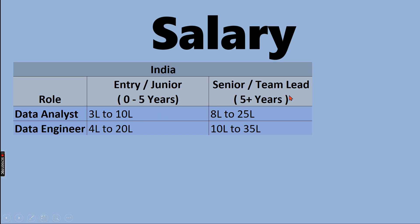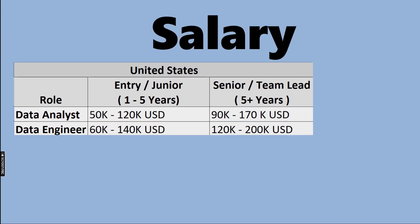A senior data analyst, who will most probably become a team leader, will get around 8 to 25 lakhs. For a data engineer, it's 4 to 20 lakhs in a junior role and 10 to 35 lakhs senior. There can be outliers getting 50–60 lakhs, but we're talking about the average. In the United States, it's $50k–$120k for a data analyst junior role, $90k–$170k at senior/team lead level, and data engineers get $60k–$140k junior, $120k–$200k senior.